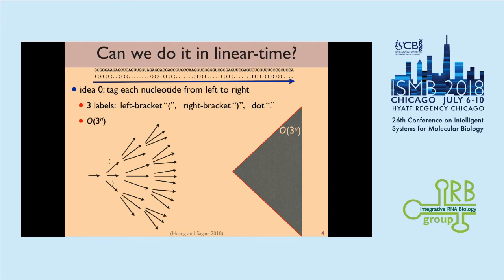The problem is: can we do it in linear time? If the RNA sequence is twice longer, we want it to take only twice more time. Otherwise it will be very hard to predict very long RNA sequences, and if your algorithm makes multiple calls to the secondary structure prediction, it will be less efficient.